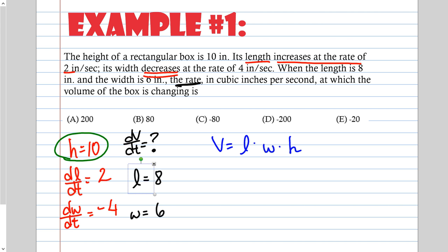Luckily, there is one variable that doesn't have a rate — it's the constant 10. The height of the box is 10 and doesn't change, so I can just plug in 10. Now we have two variables, L and W. With two variables, this is the product rule: length times width, so this is u and v. I'm going to treat the 10 as part of L, so 10L will be u and W will be v.